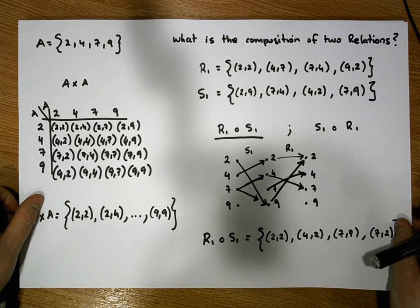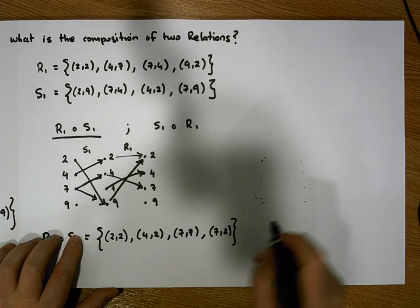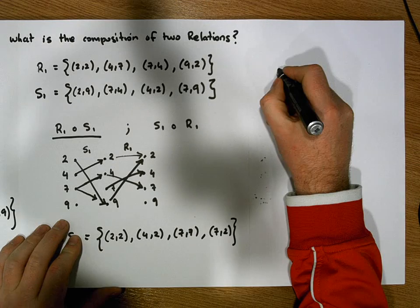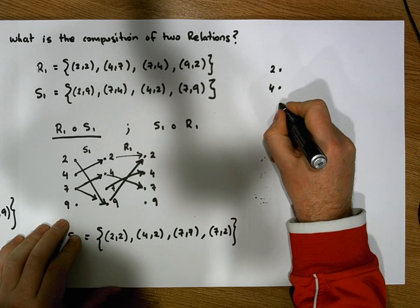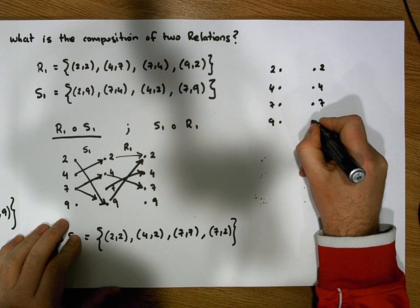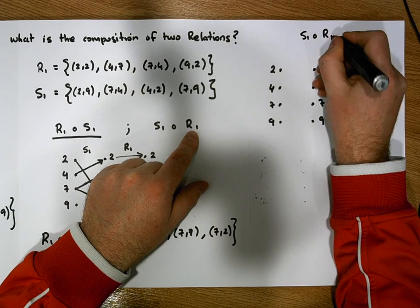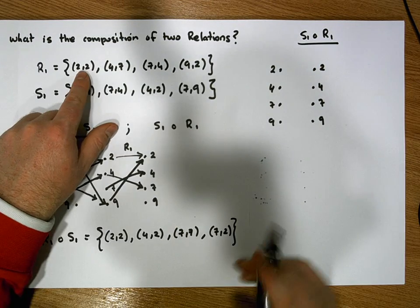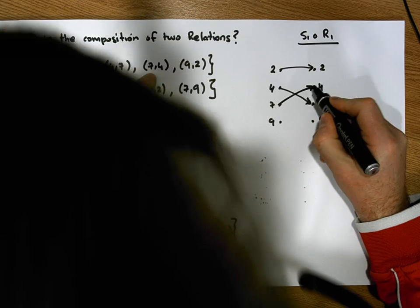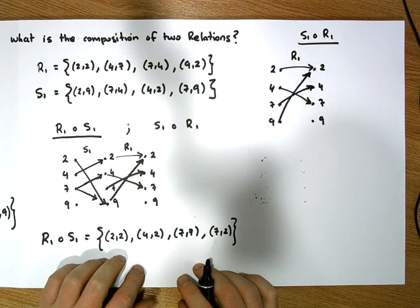Now let's look at the relation S1 after R1. We build the digraph again, but this time we do R1 first. Domain values are 2, 4, 7, and 9 mapped into 2, 4, 7, and 9. R1 tells us: 2 goes to 2, 4 goes to 7, 7 goes to 4, and 9 goes to 2. This graph represents R1.